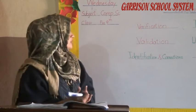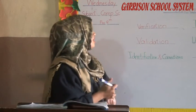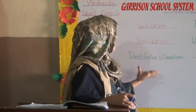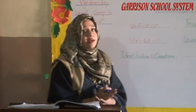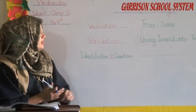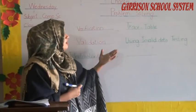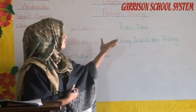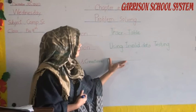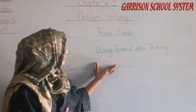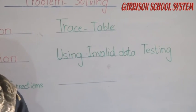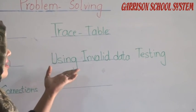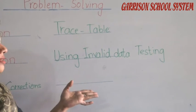In this chapter, students can learn what is meant by verification and validation, how to identify data in different manners and make corrections, how to maintain identification with the help of a trace table, and how to use invalid data — when we give a wrong command — and how to correct invalid data into valid test data.